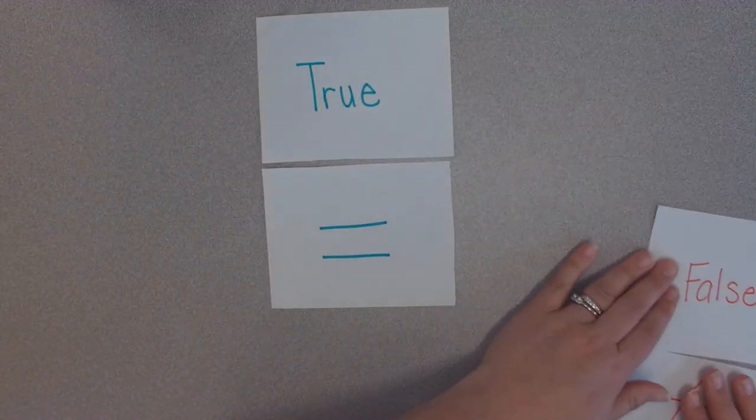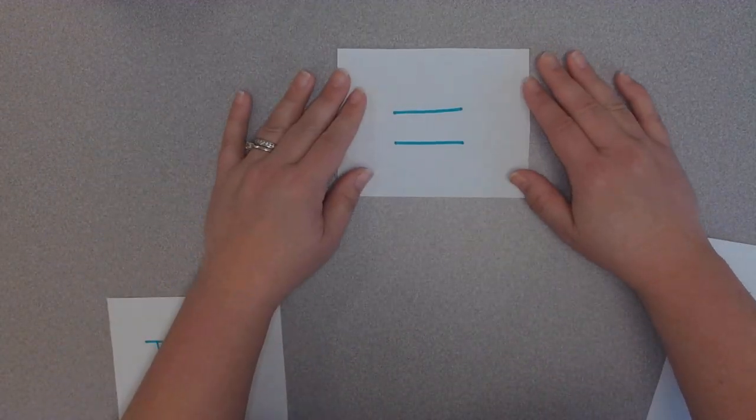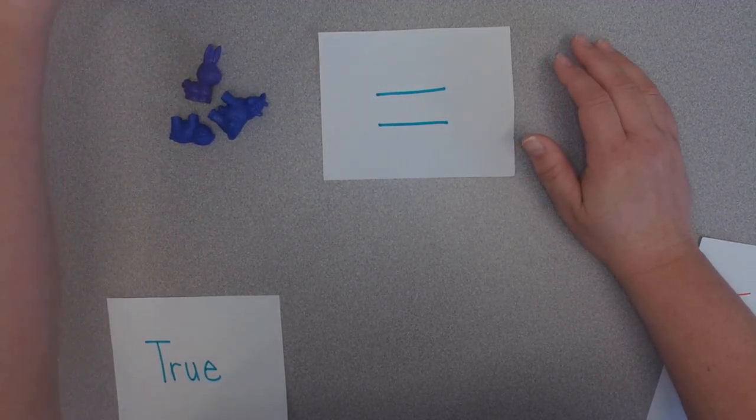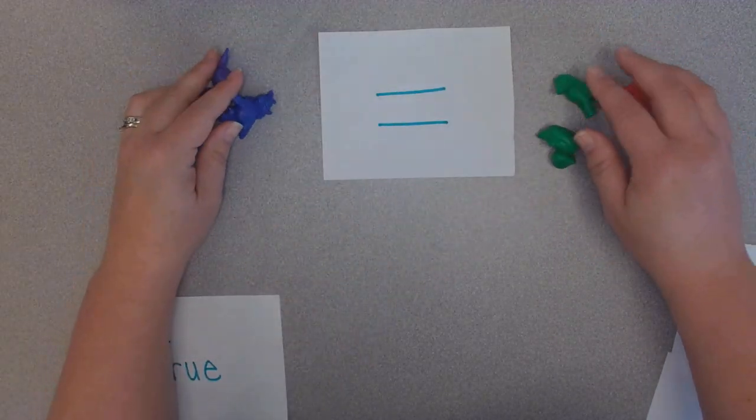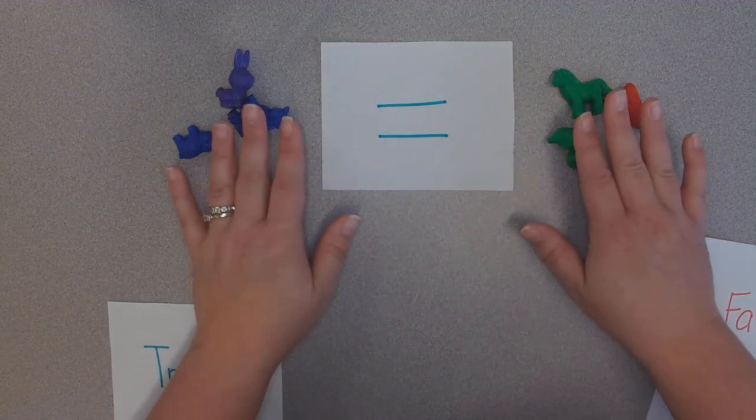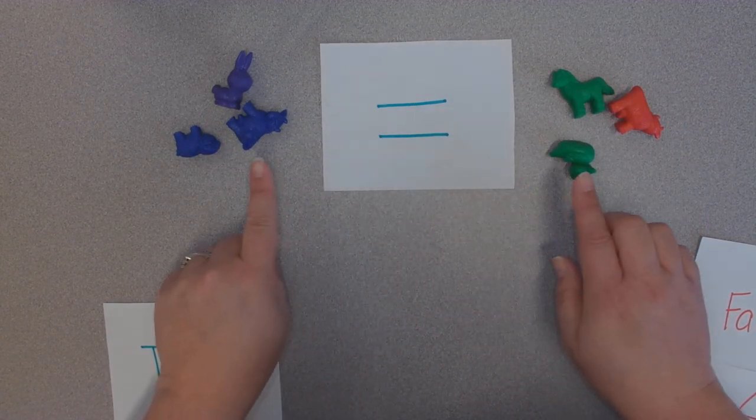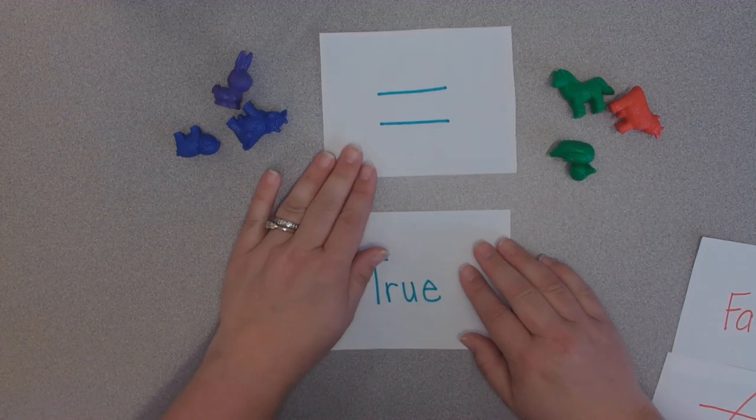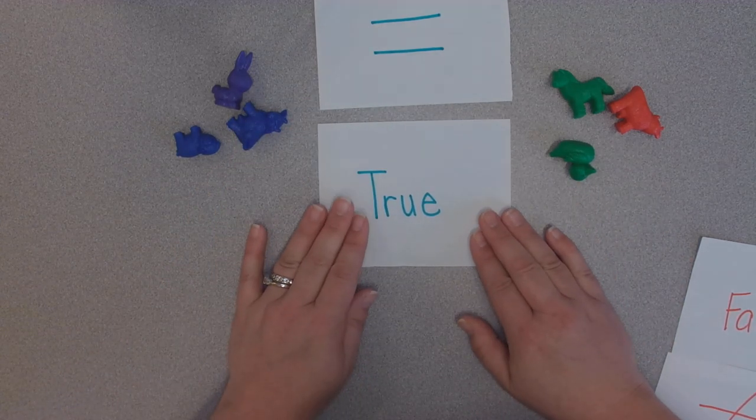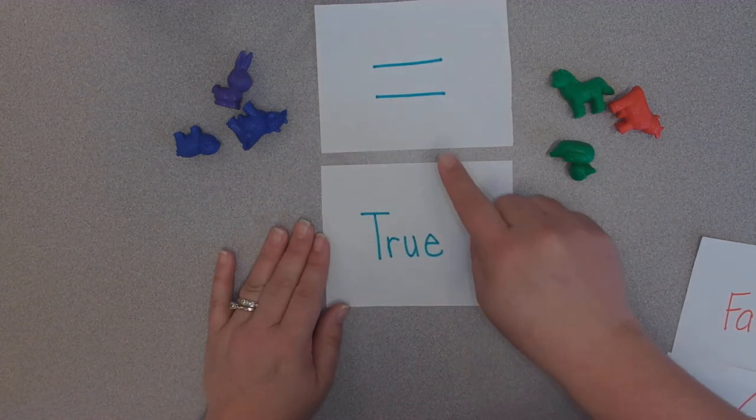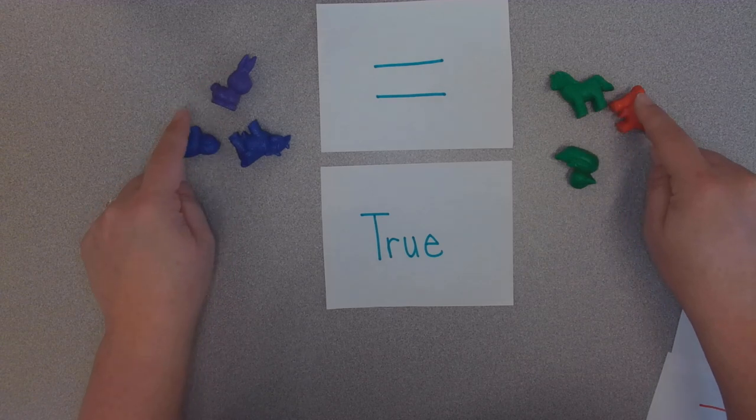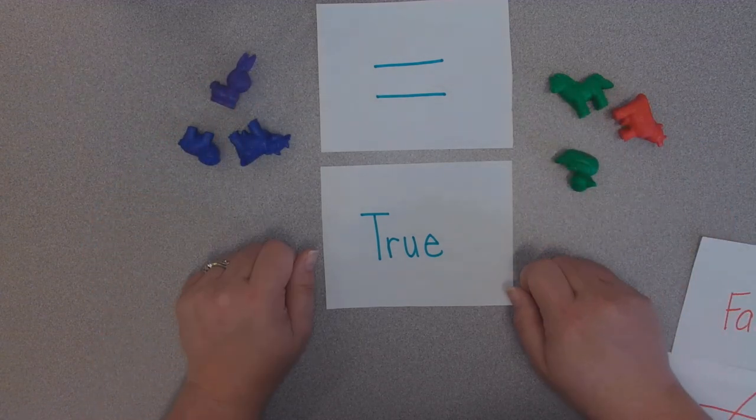Okay, we'll talk about true first. If we have two sets that are the same amount, I'll put three over here and three over here. Okay, these sets are equal, it is the same amount on both sides. We call this equation true because it is right, it is equal, meaning it's true. It's true that there are the same amount on both sides.